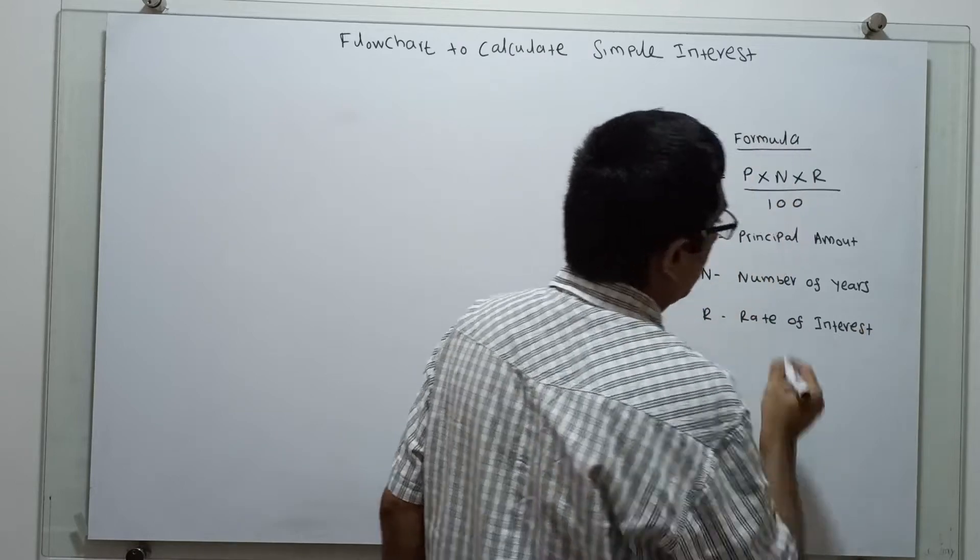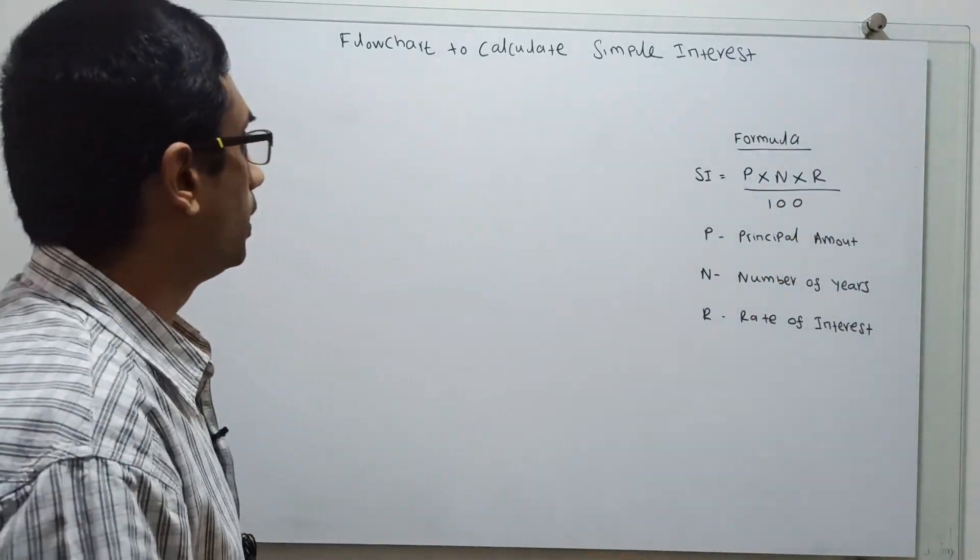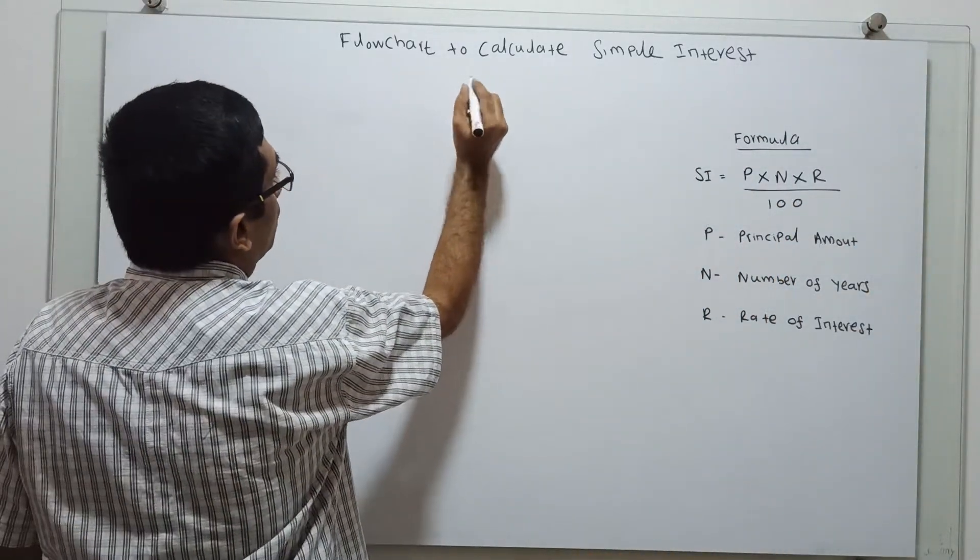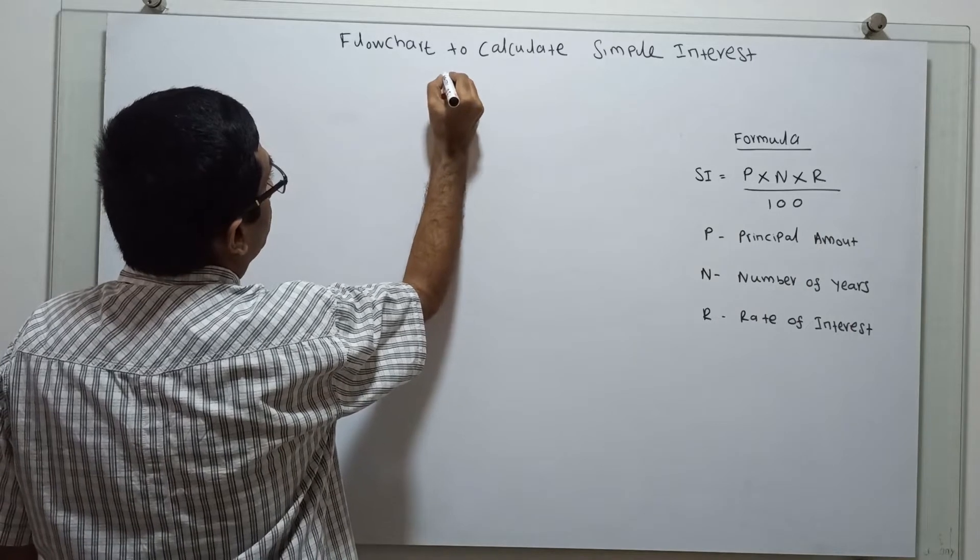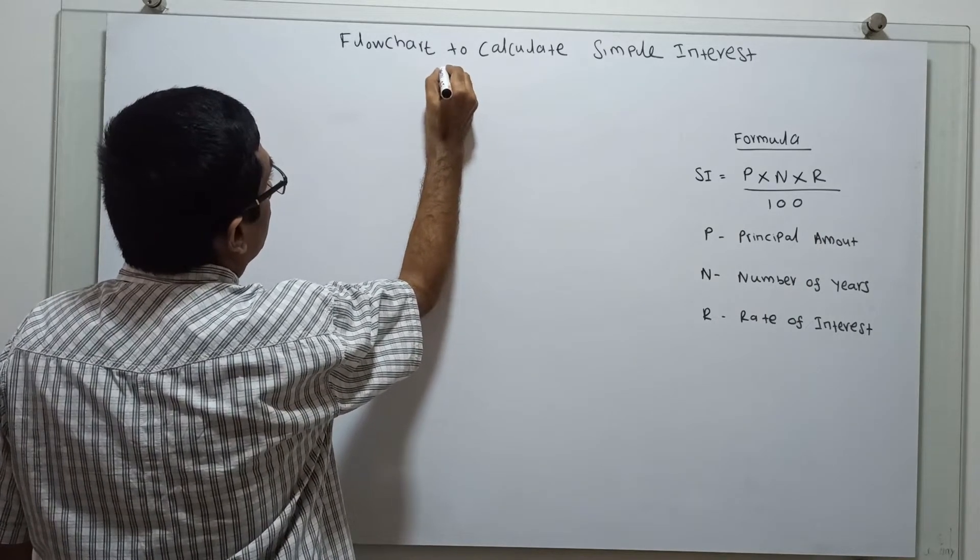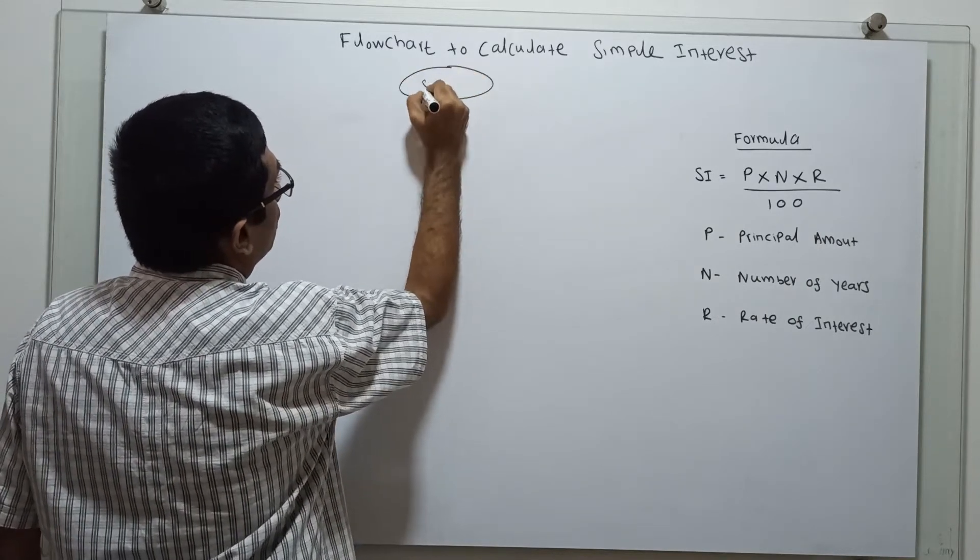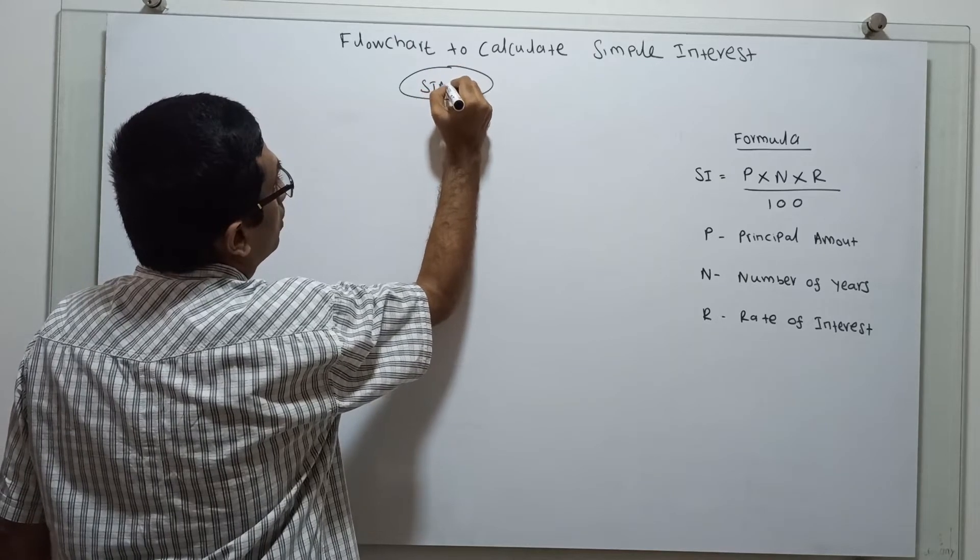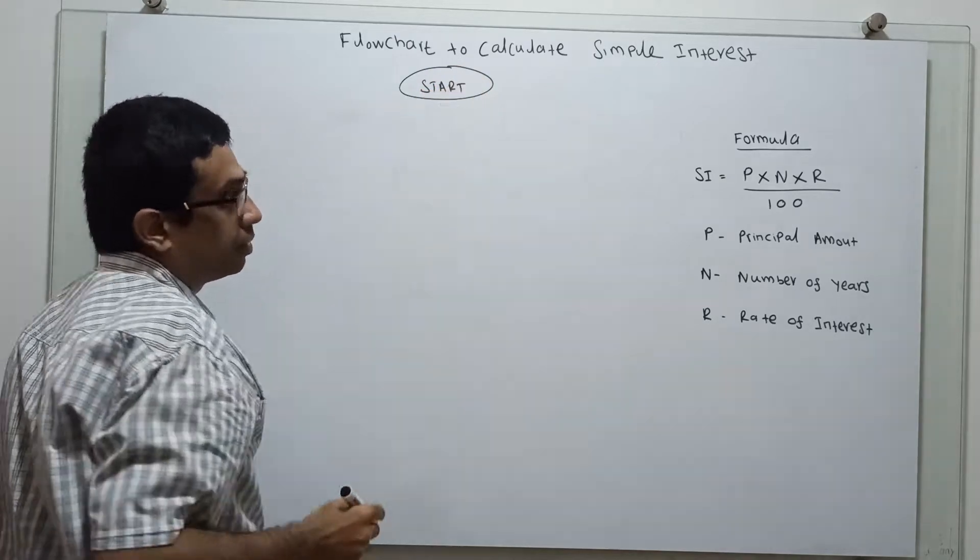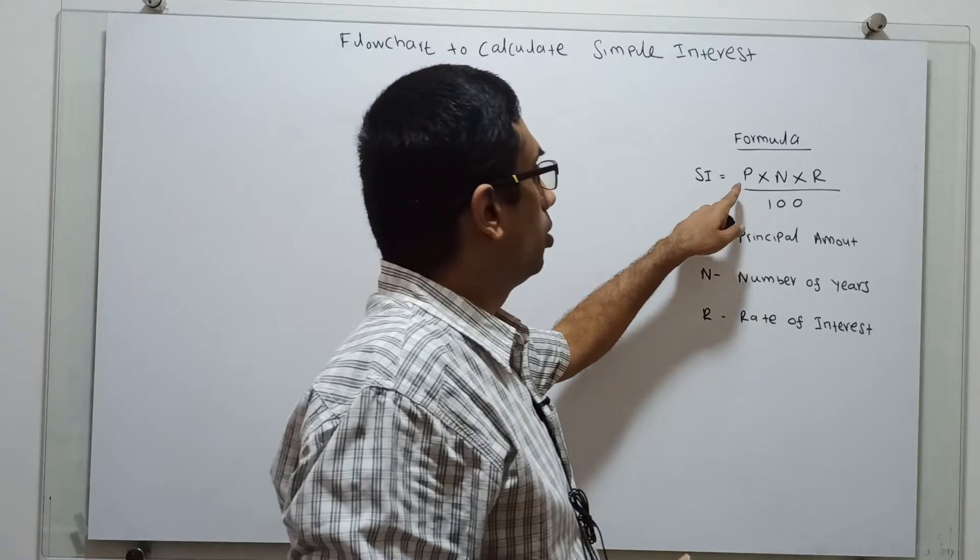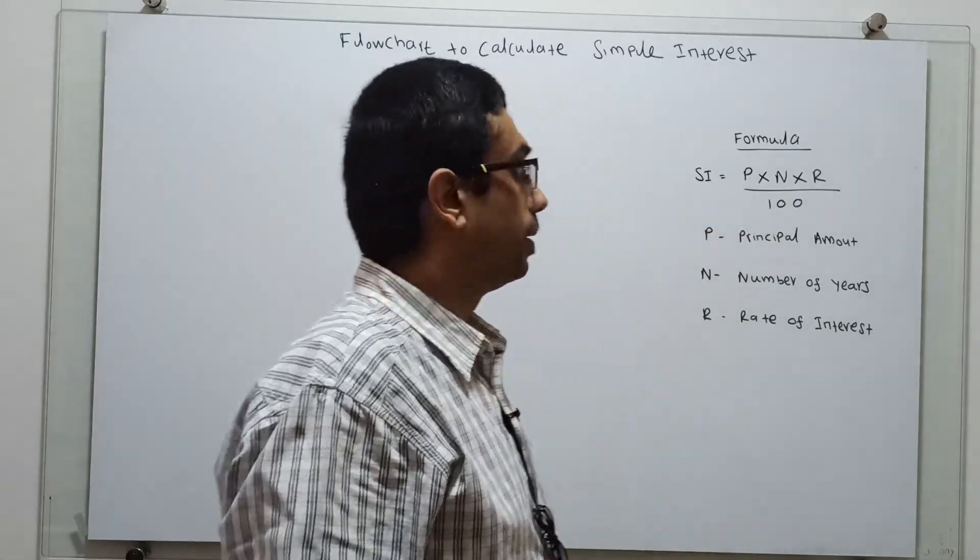So we are going to draw a flowchart to calculate the simple interest. So start, logical start. So we have to get P, N, R as an input.